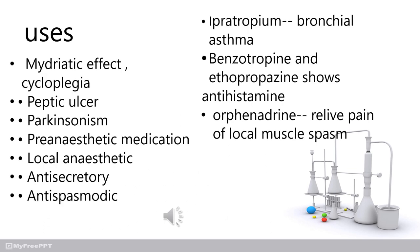Uses of anticholinergic drugs: mydriatic, cycloplegia, peptic ulcer, Parkinsonism, pre-anesthetic medication, local anesthetic, antisecretory, and antispasmodic. Mydriatic refers to dilation of the pupils. Cycloplegia is paralysis of the ciliary muscles of the iris. In peptic ulcer, the antisecretory action is the main benefit.